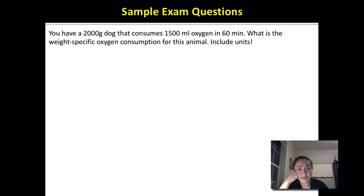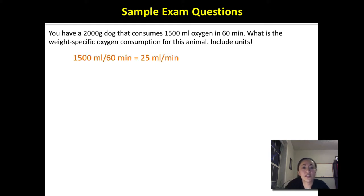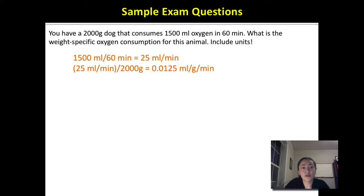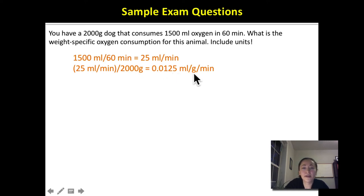Let's do some practice calculating weight-specific metabolic rate. You have a 2,000-gram dog that consumes 1,500 milliliters of oxygen in 60 minutes. What is the weight-specific oxygen consumption? First, calculate the oxygen consumption rate: 1,500 mL ÷ 60 minutes = 25 mL/min. Then divide by the mass: 25 ÷ 2,000 = 0.0125 mL/g/min.